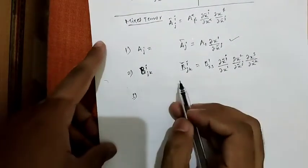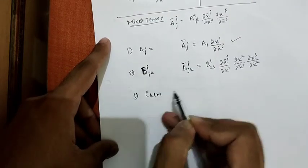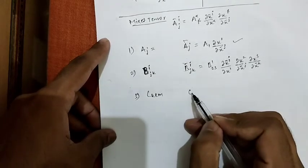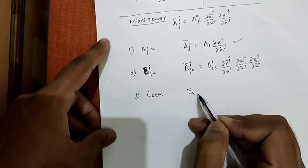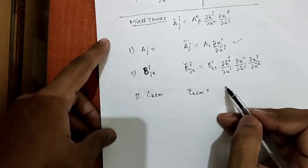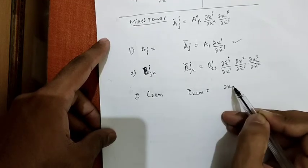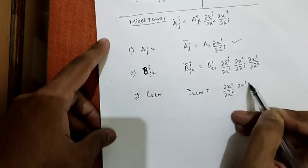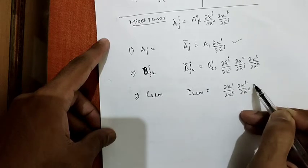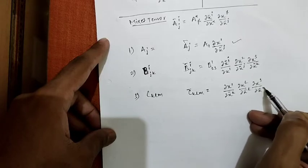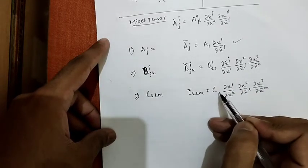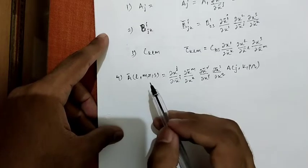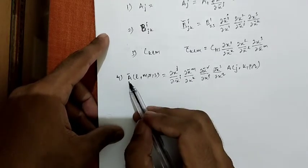The last transformation example is c_klm. Since this is a purely covariant component, the transformation law is: c̄_klm = c_123 (∂x^1 / ∂x̄^k)(∂x^2 / ∂x̄^l)(∂x^3 / ∂x̄^m).